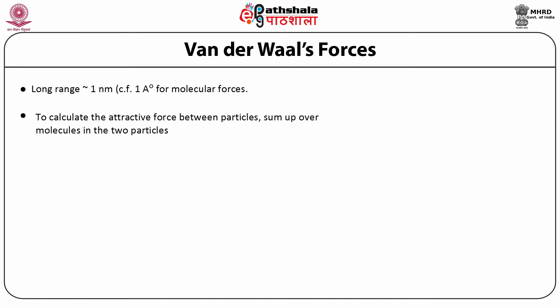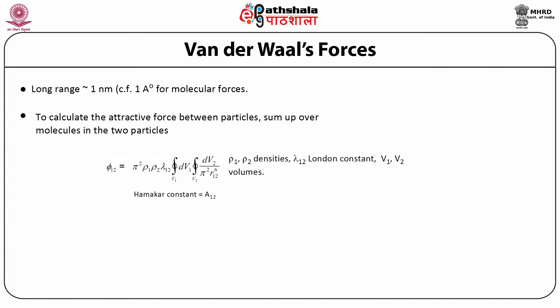One method of calculating the Van der Waal attraction energy between the particles is to sum up the attraction energy between two molecules — this method is due to Hamaker. In Hamaker's method, the dispersion attraction between the molecules in the two particles is summed up taking one molecule at a time. Therefore, the interaction energy between two particles separated by vacuum is given by: phi_12 = pi² · rho_1 · rho_2 · lambda_12 · (double integral dV1 dV2) / (pi² · r12⁶). Here r12 is the distance between the particles, rho_1 and rho_2 are the densities of the two particles, lambda_12 is the London constant between them, and dV1 and dV2 are the volume elements of the two particles.